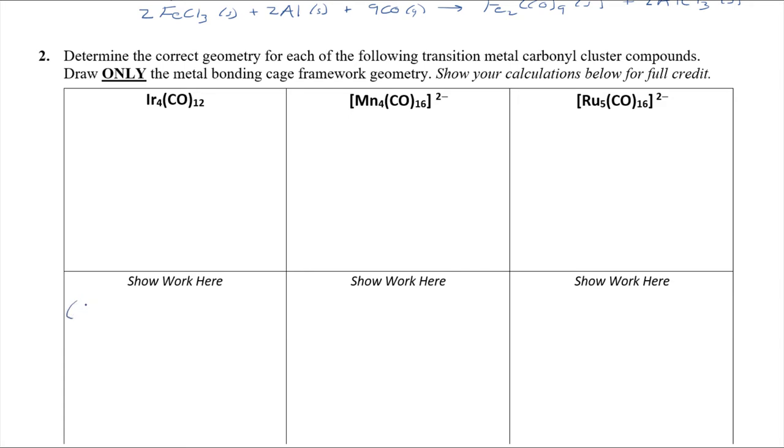The first thing we need to do is determine the number of electrons in the complex. In the cluster, we've got iridium. If we look at iridium on the periodic table, it's in the cobalt family. So that's going to be four metals times nine electrons. And we're going to add that to the ligand electrons. So you have 12 carbonyls. Each of those brings two electrons. So we've got this total, I think I get 60 electrons for that cluster. And we can set that equal to our formula: 60 equals the number of metals times 18, from our 18 electron rule, minus two times the number of metal-metal bonds. And that's going to be really important.